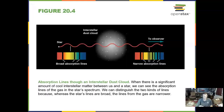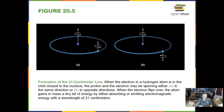We can look at the absorption lines of spectra going through an interstellar cloud to determine what it's made up of and how it's moving.